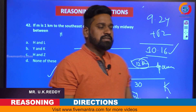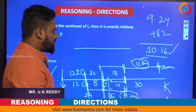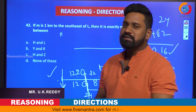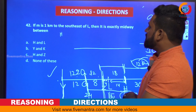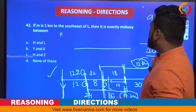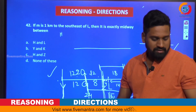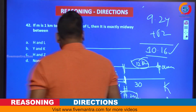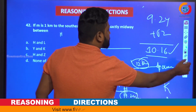Let us see the question. This question is also based on the same data. If M is one kilometer to the southeast of L, then it is exactly midway between — that is given. If you observe, this diagram is important for this question, so let us understand it clearly.